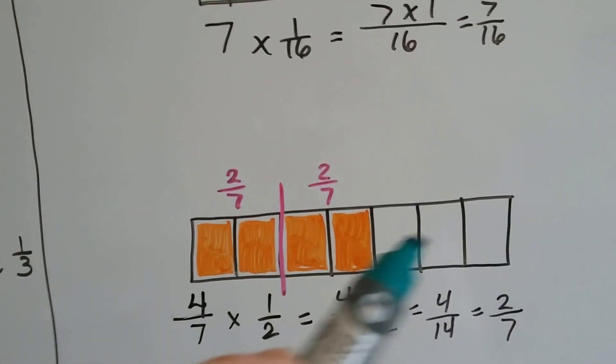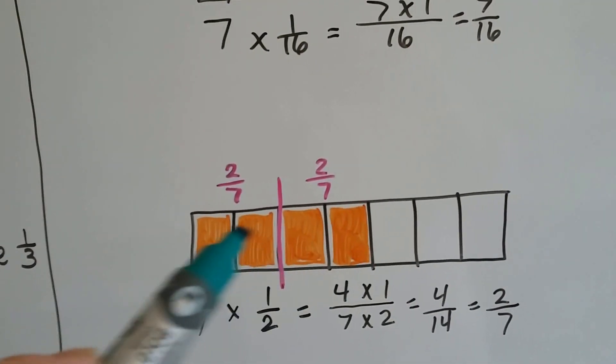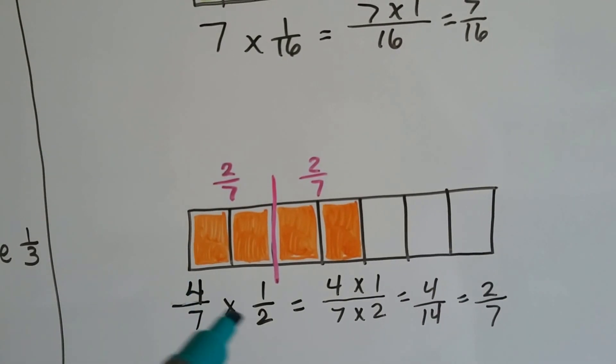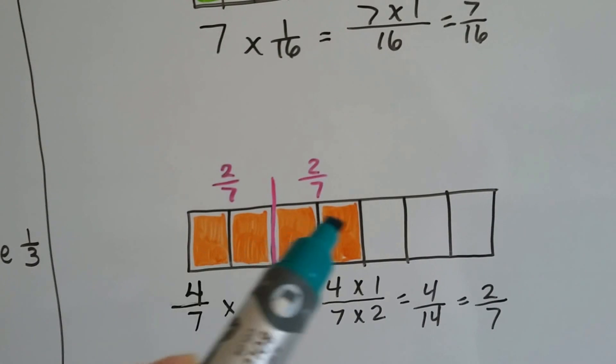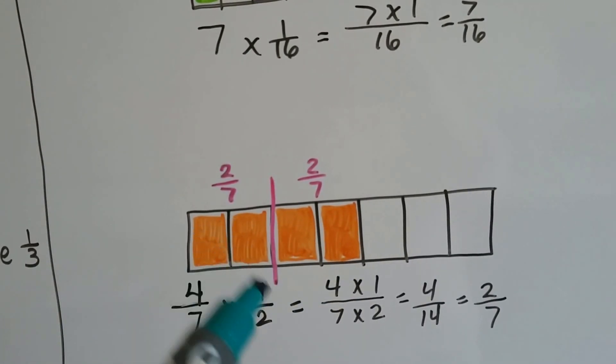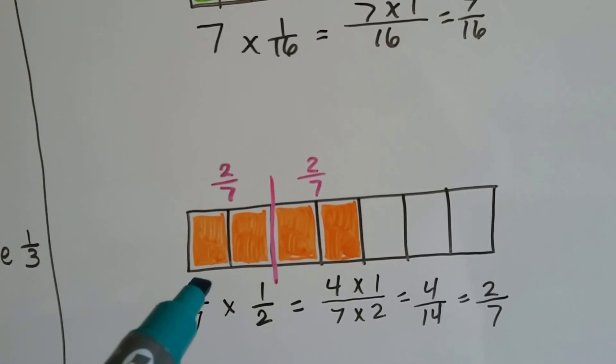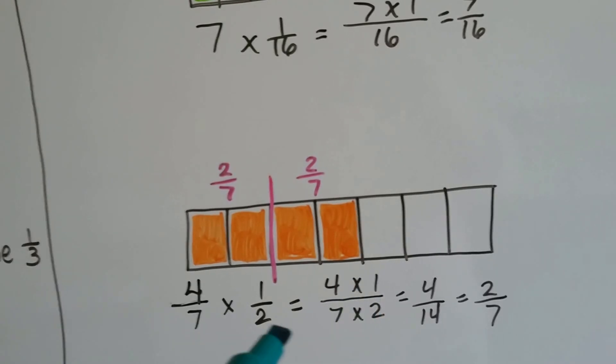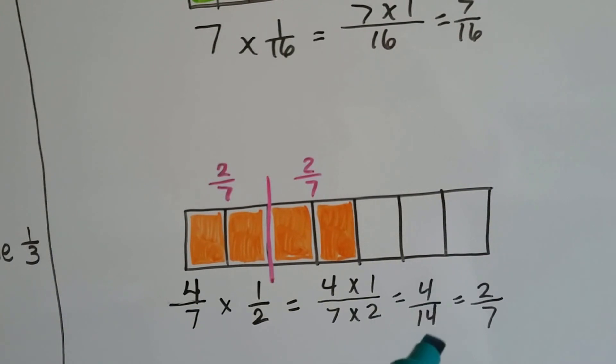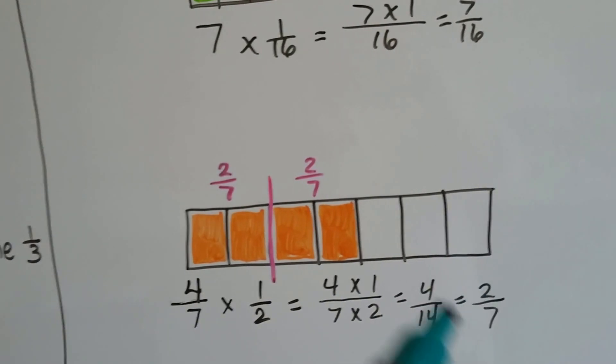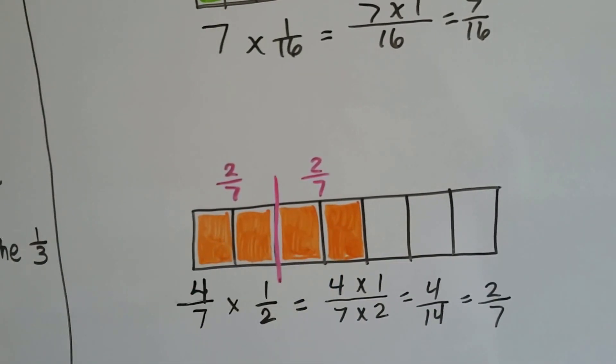If we had a bar split into 7 parts, and 4 of the parts were filled, and we multiplied it by 1/2, we'd be cutting the 4/7 in half. 2/7 and 2/7. 4 times 1 is 4. 7 times 2 is 14. We divide both by 2 to reduce it to its lowest terms, and it becomes 2/7 for each side.